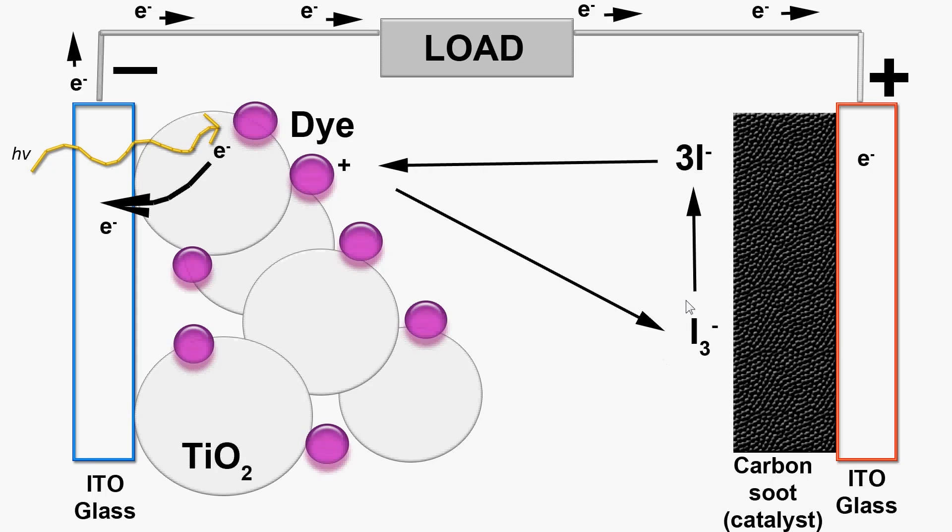Here they reduce the triiodide ions into iodide ions using the carbon soot as a catalyst to speed up the reaction. Iodide ions then diffuse through the electrolyte and reduce the oxidized dye molecules. The iodide itself becomes triiodide again and the reduced dye molecules are now ready to convert the next photon of light.